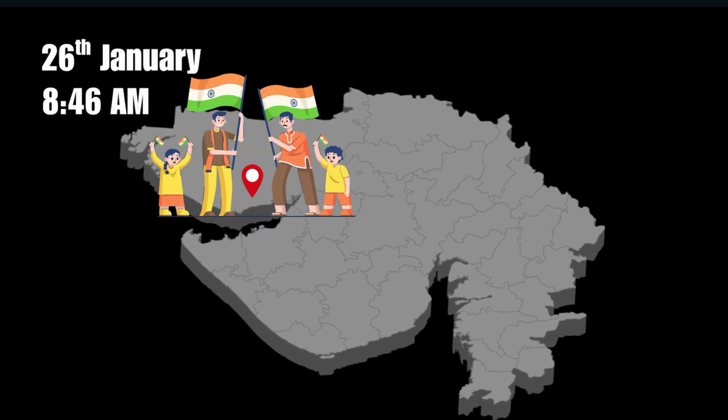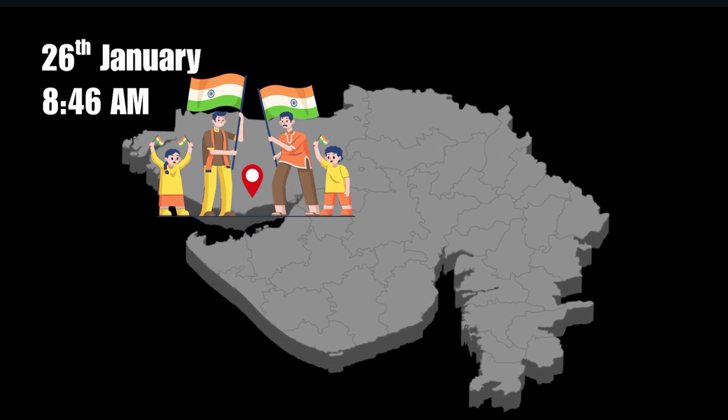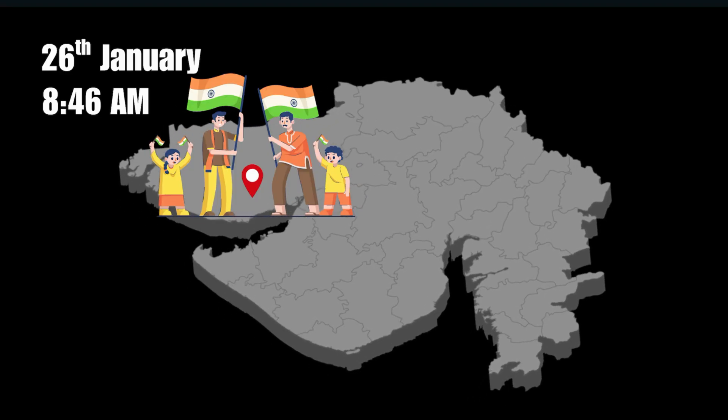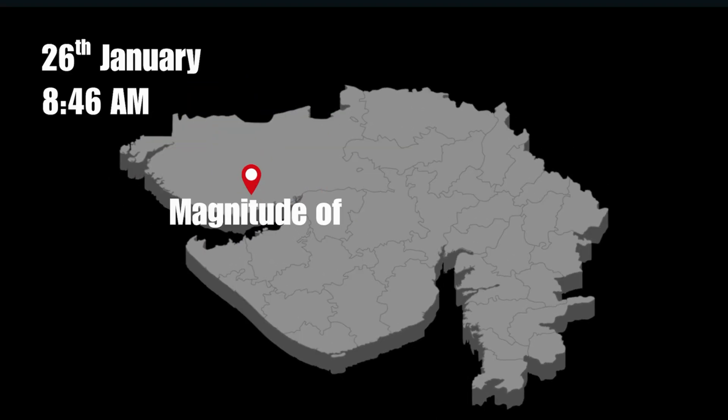The ground shook so violently that buildings collapsed within seconds. It was one of the strongest earthquakes India had ever felt, a magnitude of 7.7 on the Richter scale. The Bhuj earthquake didn't just shake Gujarat. It shook the entire country's understanding of how powerful Earth's hidden forces can be.